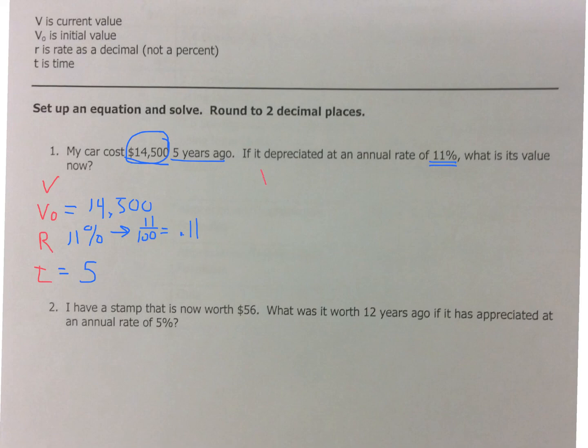Alright, so let's set up our formula. V equals V_O with 1, and it's depreciation, so it's minus R raised to the T. So here we go. Let's fill in what we know. I know that my V, I don't know. My V_O is 14,500. 1 minus my rate of 0.11, and the time is 5 years. Now, order of operations says I start with my parentheses, and this is where we always begin. We look in here first to make sure we can do the work.